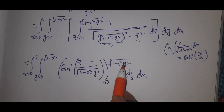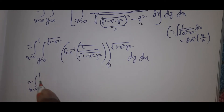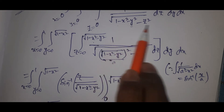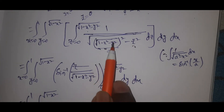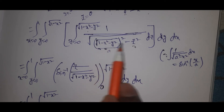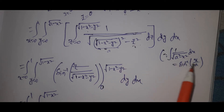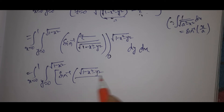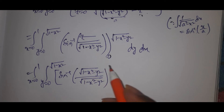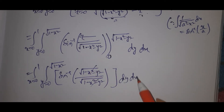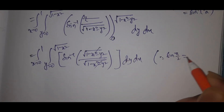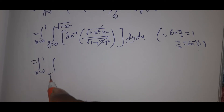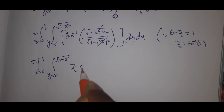Applying the limits: at the upper limit z = √(1−x²−y²), we get sin⁻¹(1) = π/2. At the lower limit z = 0, sin⁻¹(0) = 0. So the integral reduces to ∫₀¹ ∫₀^√(1−x²) (π/2) dy dx.